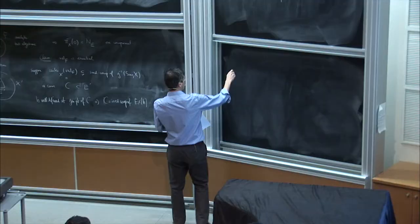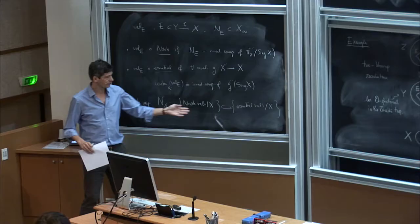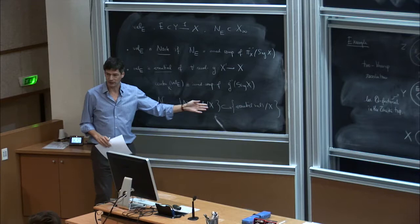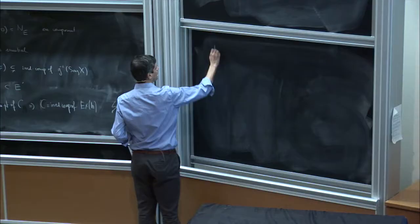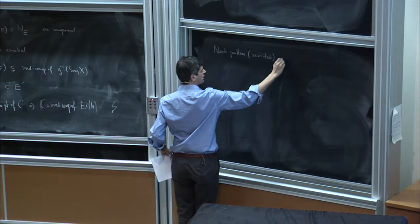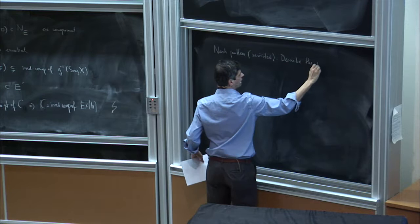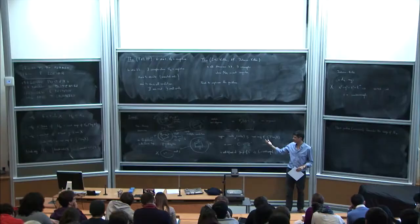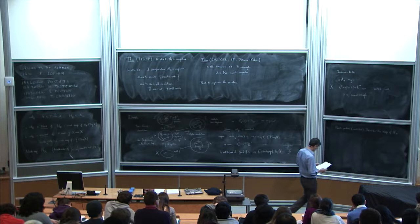Given these examples, we need to rephrase the problem. We look at the Nash map from Nash valuations into essential valuations and want a way of describing the image. The revised Nash problem is: describe the image of the Nash map. We need to come up with a new way of characterizing interesting divisors among the essential valuations.